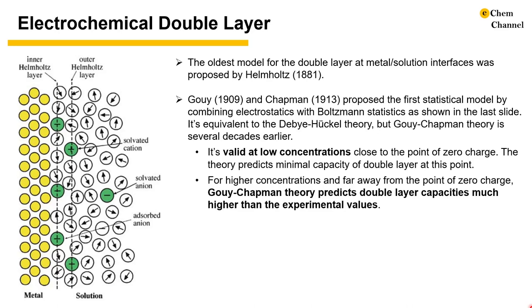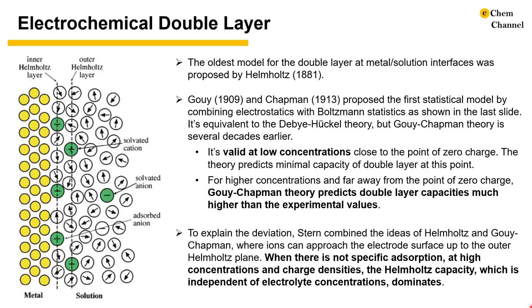For higher concentrations and far away from the point of zero charge, the Gouy-Chapman theory predicts double layer capacities way higher than the experimental values. To explain the deviations, Stern combined the ideas of Helmholtz and Gouy-Chapman, where ions can approach the electrode surface up to the outer Helmholtz plane. When there is no specific adsorption on the surface and at high concentrations and charge densities, the Helmholtz capacity, which is independent of the electrolyte concentrations, dominates.